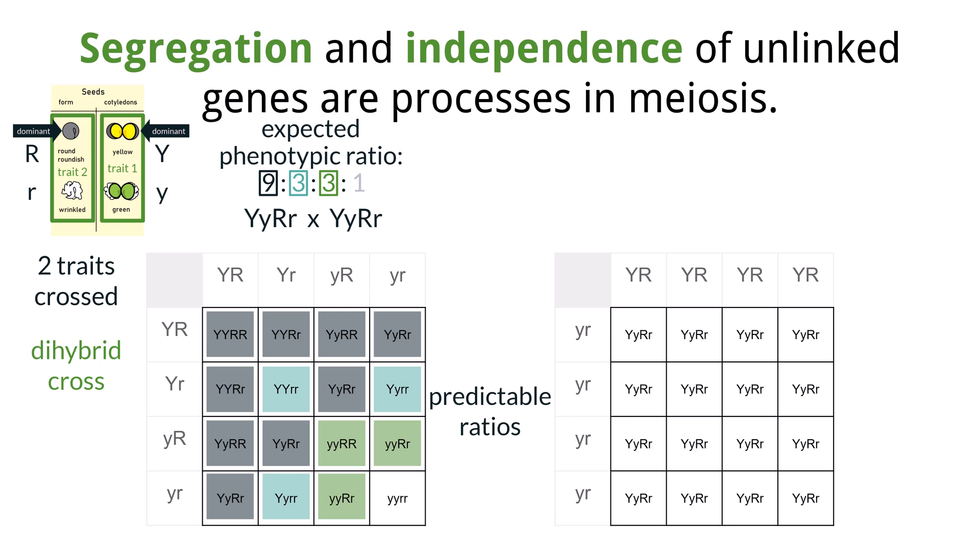Three may exhibit recessive of the first trait but dominance of the second trait: lowercase y, lowercase y, uppercase R, uppercase R, or lowercase y, lowercase y, uppercase R, lowercase r. And one may exhibit both traits as recessive, all lowercase letters.